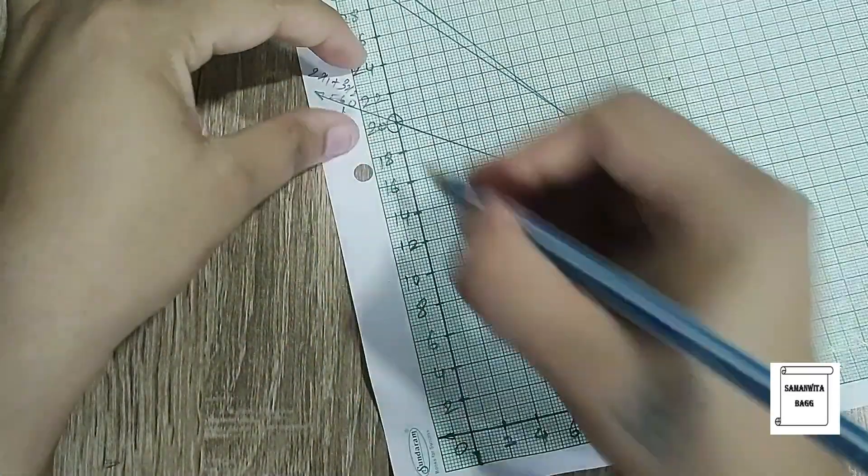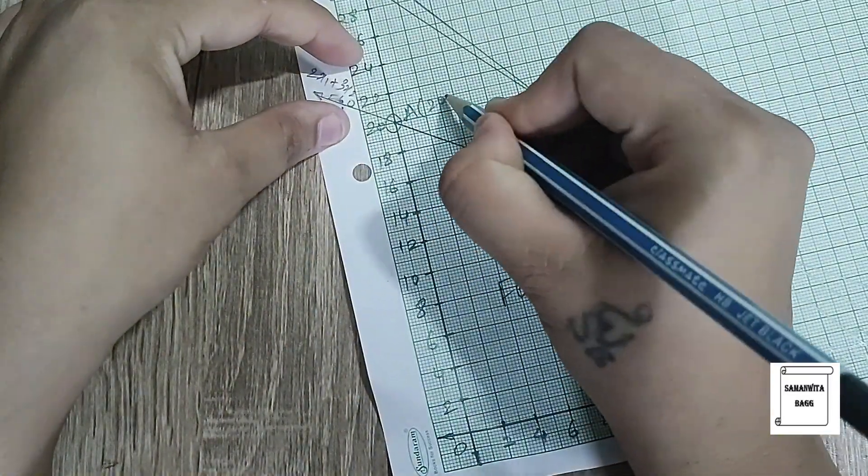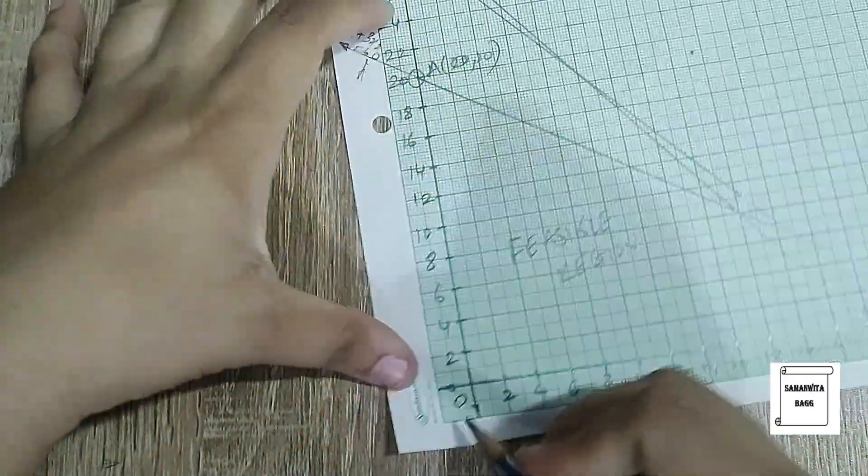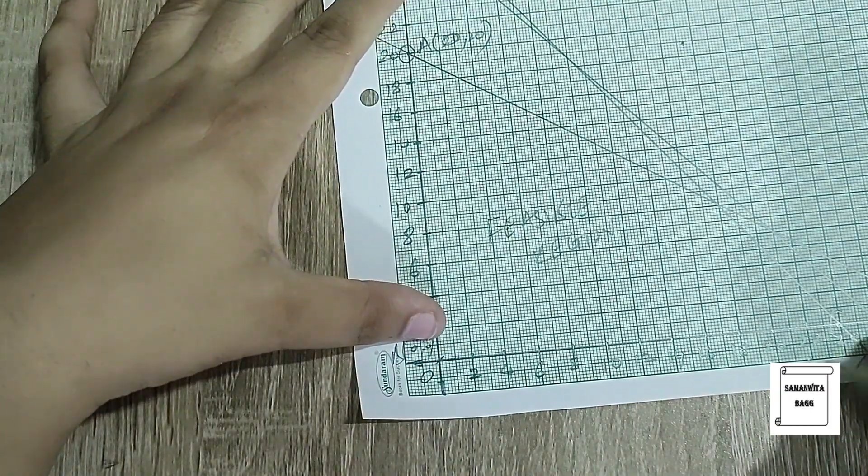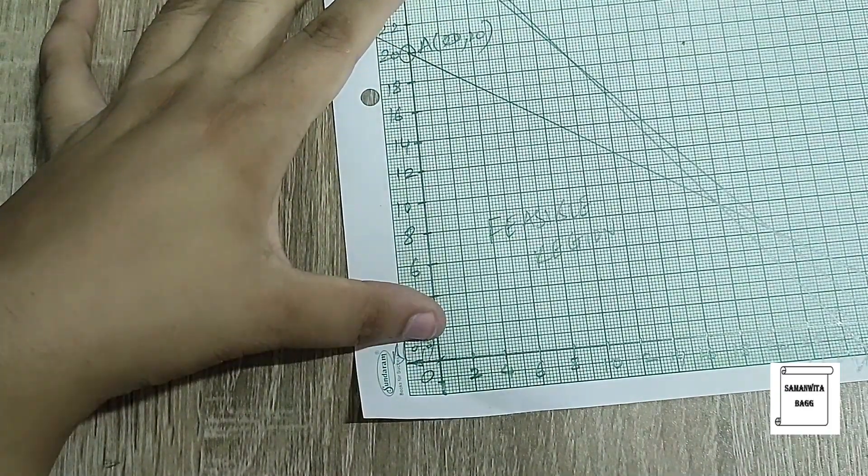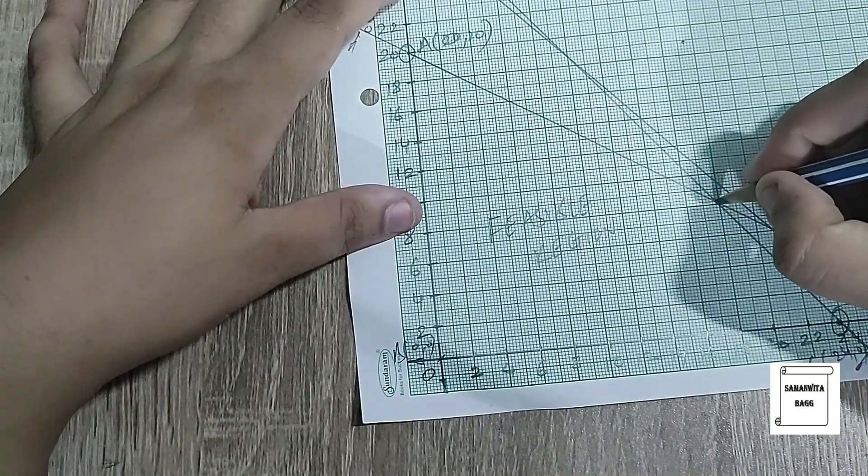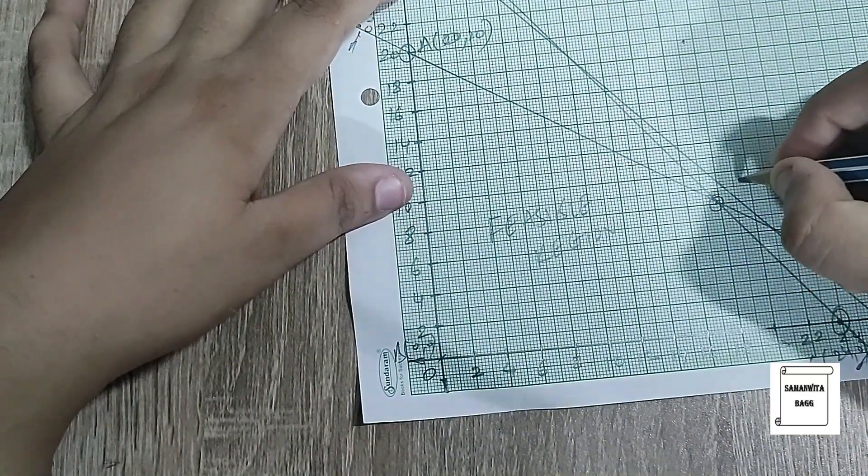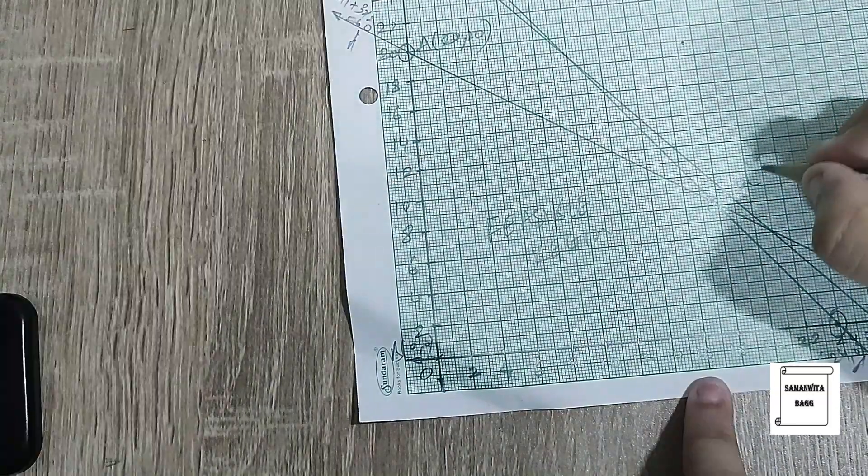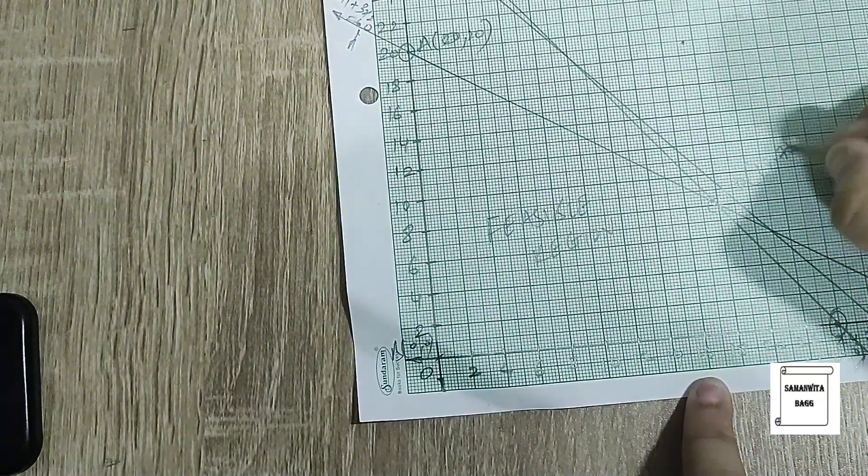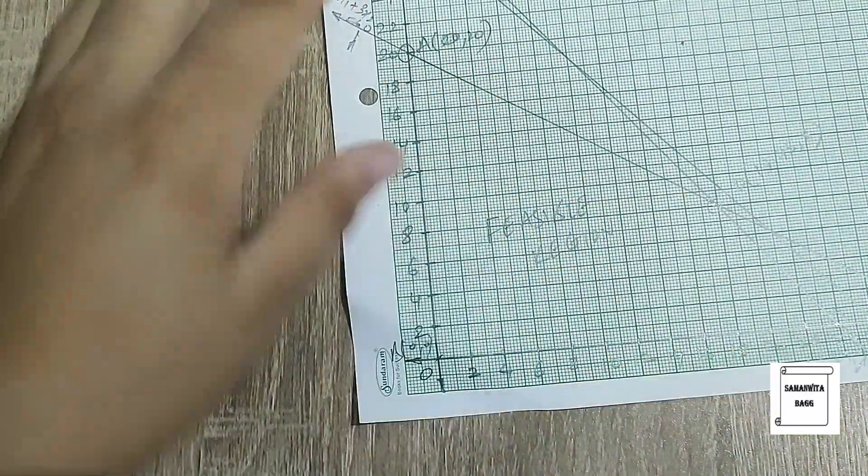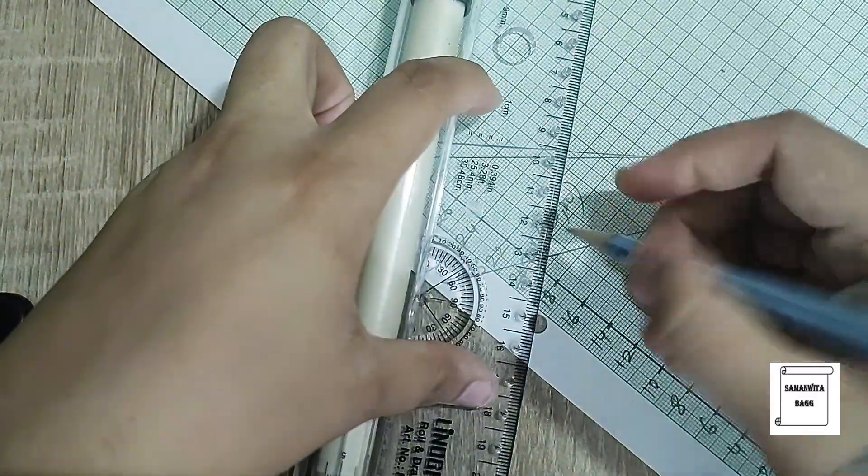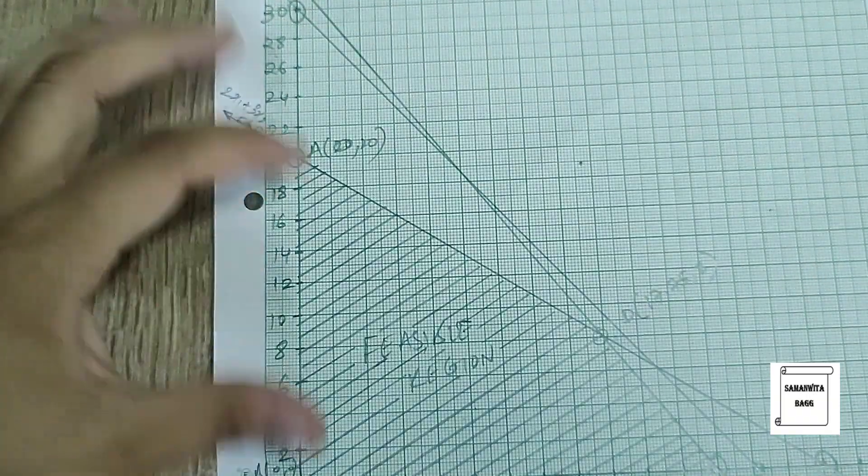I'll mark the boundary points. This is A (0, 20), this is B (0, 0), this is C (24, 0), and the fourth point is D at (17.75, 8). So these are the points and I'll mark the hatching section. I have marked the hatching section.